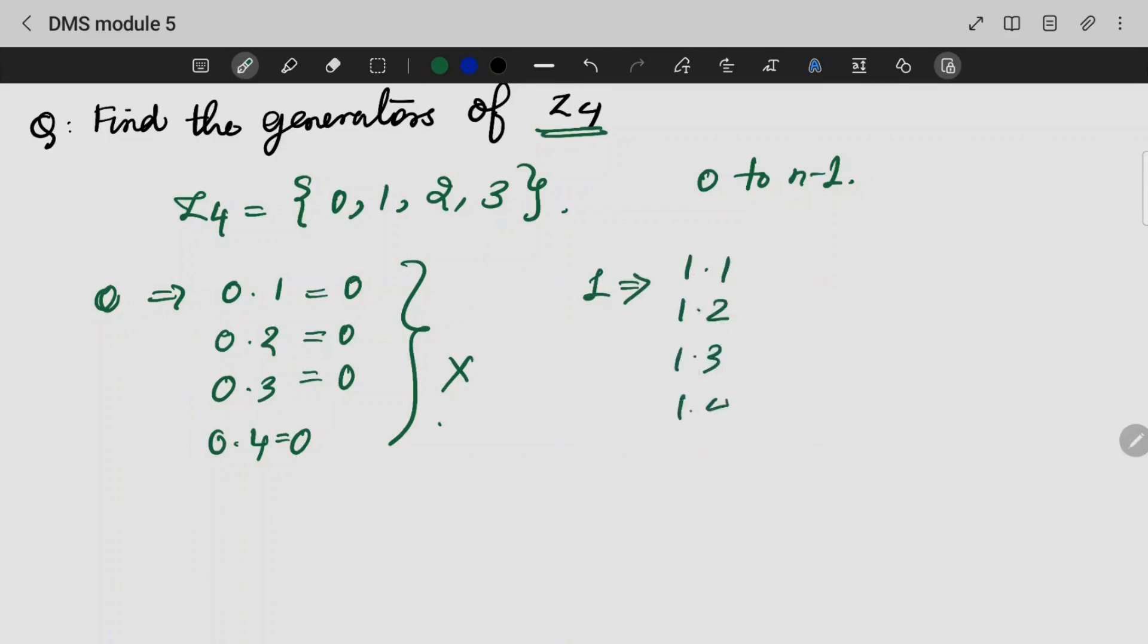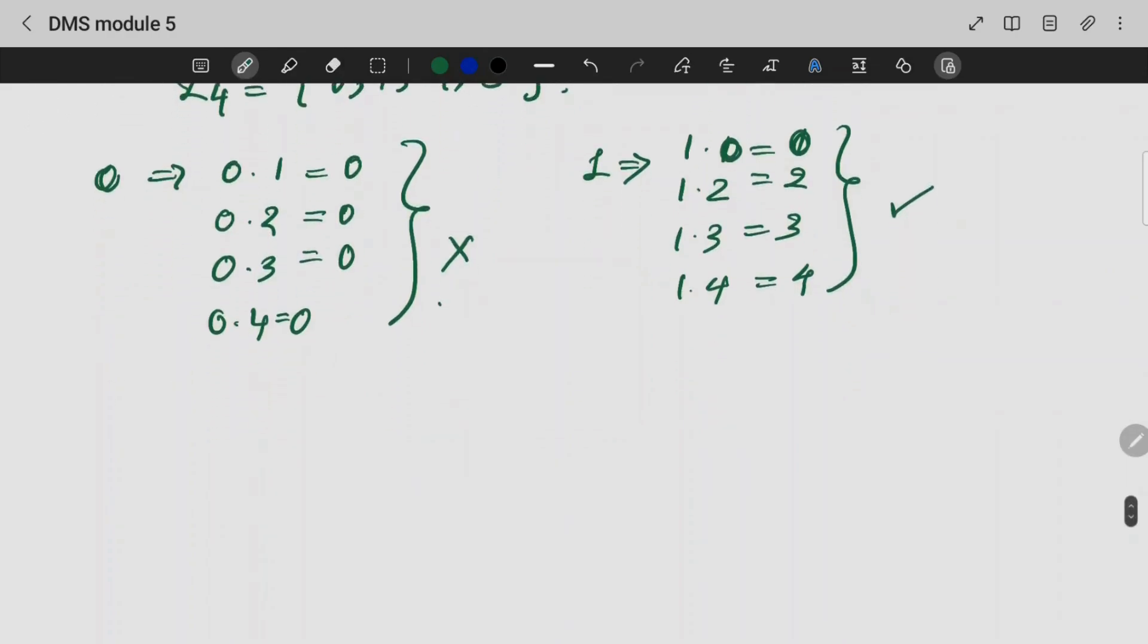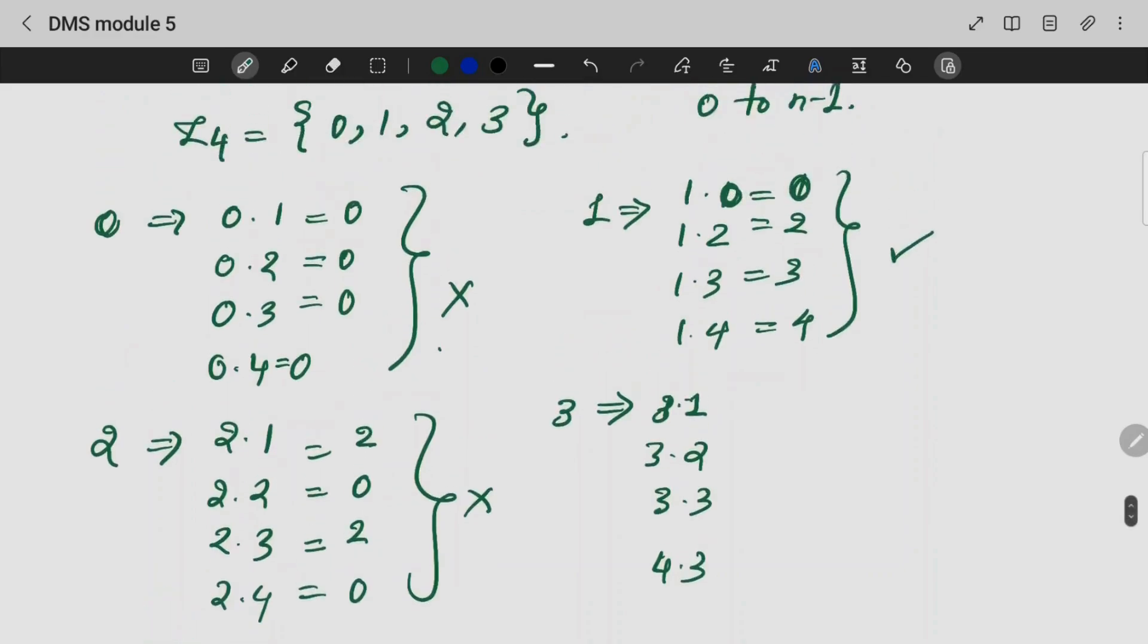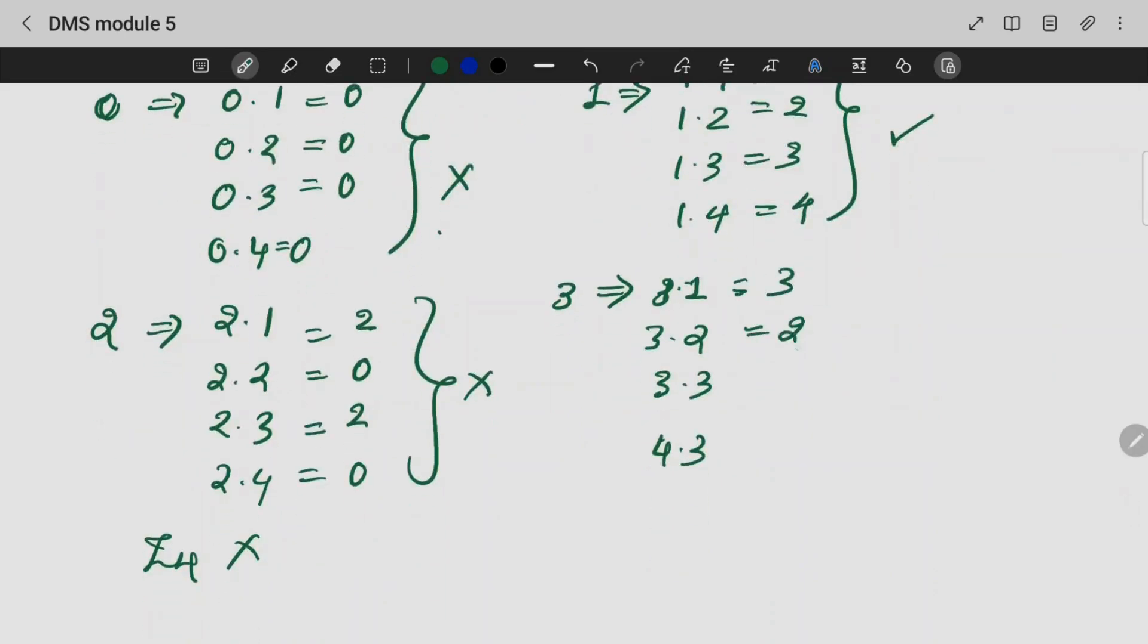1.1, 1.2, 1.3, 1.4 gives us all elements. 2.1 is 2, 2.2 is 0. Here we are not being able to generate the entire group of Z4. Now 3: 3.1 is 3, 3.2 is 2, 3.3 is 1, 3.4 is 0. We are able to generate the group using 3.